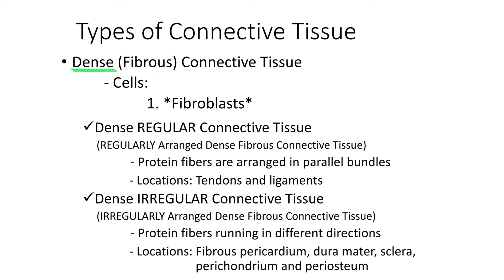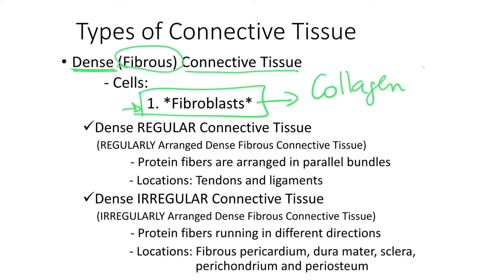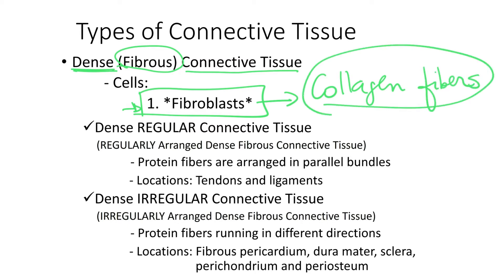Another type of connective tissue is the dense connective tissue, also called fibrous connective tissue. It was named fibrous because it has lots of fibers. The cells that produce these fibers are fibroblasts, which are the main cells in dense fibrous connective tissue. The main fibers they produce are collagen fibers, which give great tensile strength to a tissue.